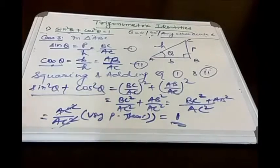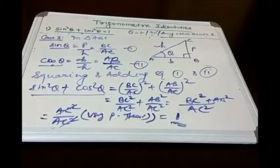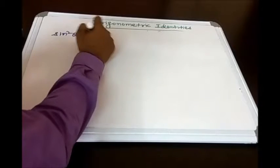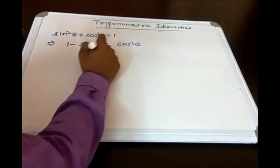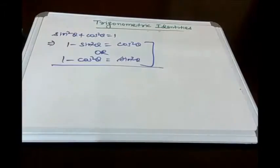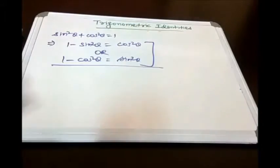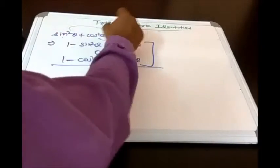We will now use this identity in solving problems. Two more results follow from sin²θ + cos²θ = 1: first, 1 − sin²θ = cos²θ; and second, 1 − cos²θ = sin²θ. These results we will use directly in problems, as they are simply derivatives of the first identity — you can interchange sin and cos to obtain each form.